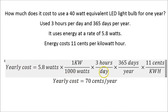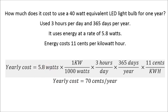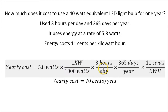We're going to lay everything out using the factor label method. We've got 5.8 watts and we want to convert that to kilowatts — there's one kilowatt per every thousand watts. Multiply by three hours every day to get the energy use per day in kilowatt hours, then multiply by 365 days per year for the total annual energy use, then by 11 cents per kilowatt hour. That comes to 70 cents per year.